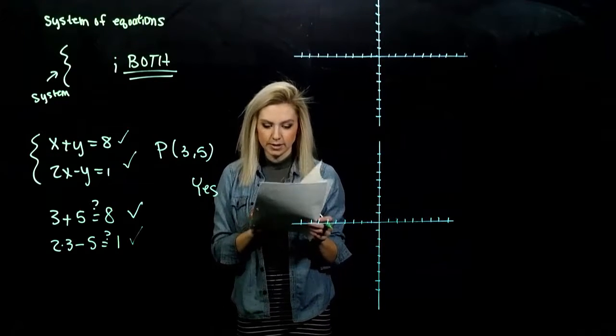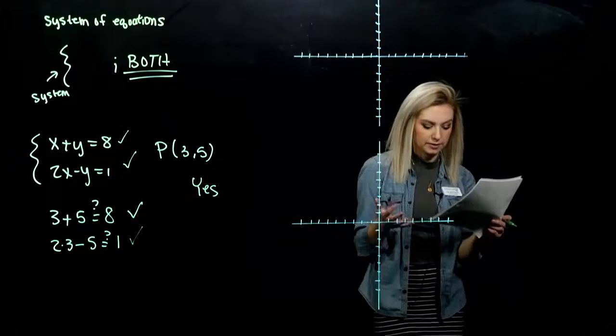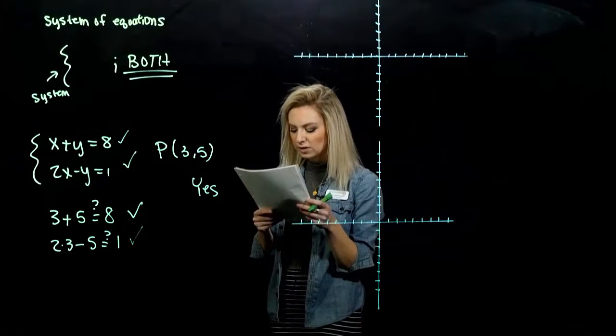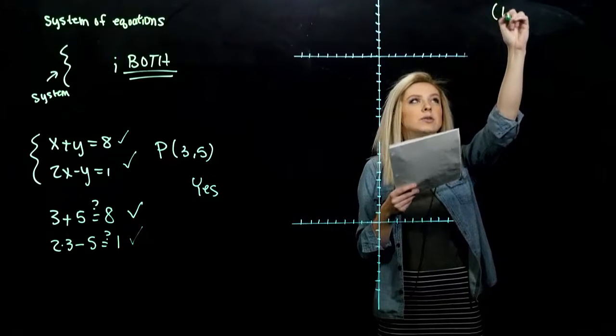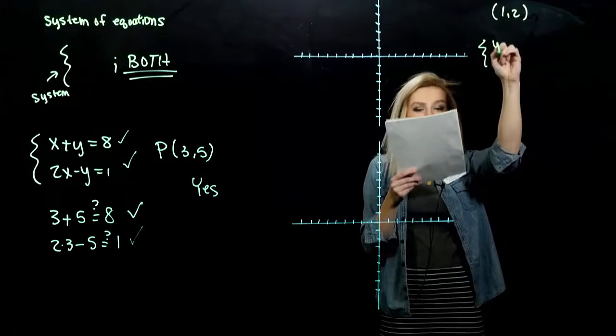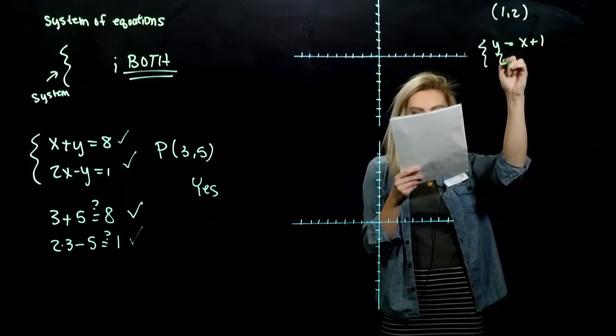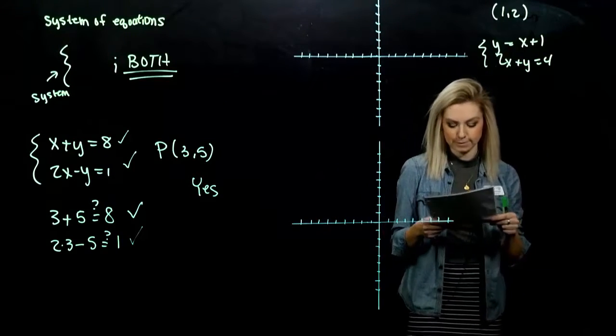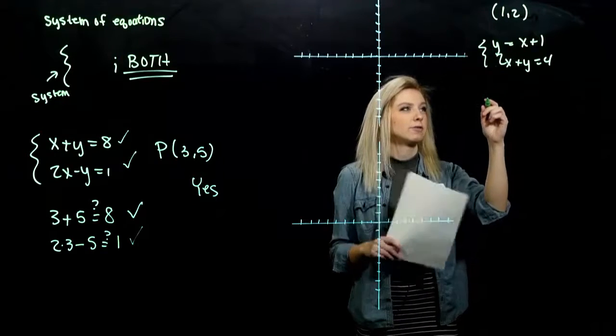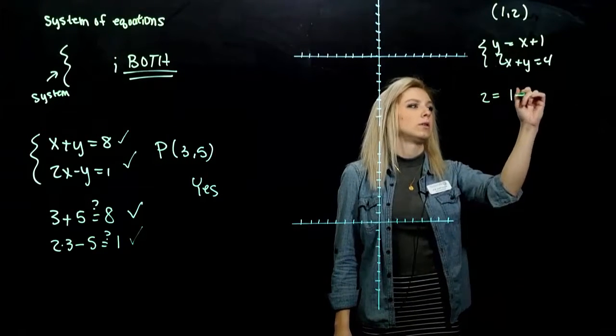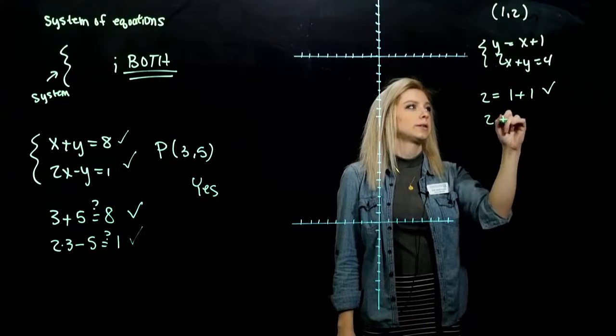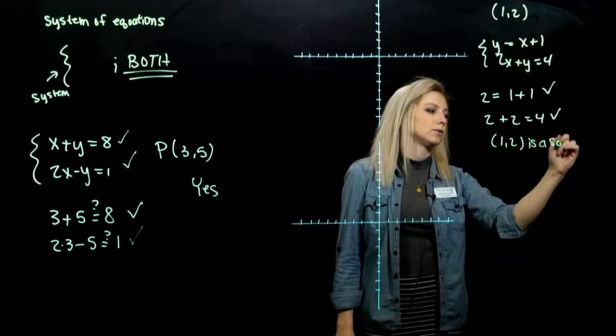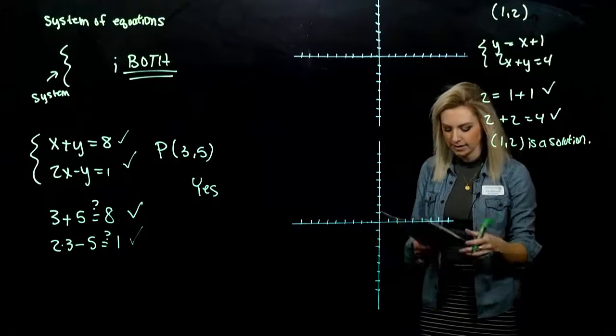So we know that P is a solution to the system. Satisfies both of them at the exact same time, tells us the point where they're intersecting. So we could have more systems where we don't have a picture and we have to prove or tell that it's not a solution to the system at some point. So we want to determine whether (1,2) is a solution to the system: y equals x plus 1, 2x plus y is equal to 4.